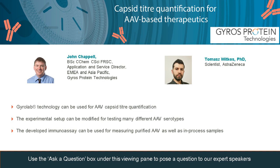John has over 25 years of experience in the contract research industry, supporting both preclinical and clinical drug development, specializing in supporting biological compounds from an analytical perspective. He is joined by Tom Viscos, scientist at AstraZeneca. During his PhD and postdoctoral research at the University of Manchester, Tom investigated the pathology of rare genetic diseases, and in 2018 he joined MedImmune, now AstraZeneca, to work on bioassay development for in-vivo expressed biologics, including AAV-based therapeutics. I will now hand over to John to kickstart the presentation.